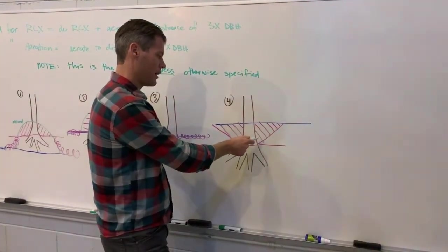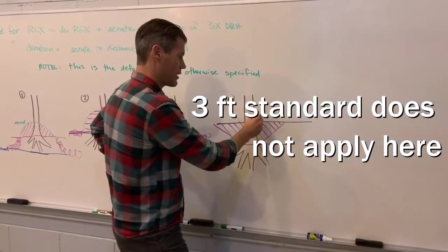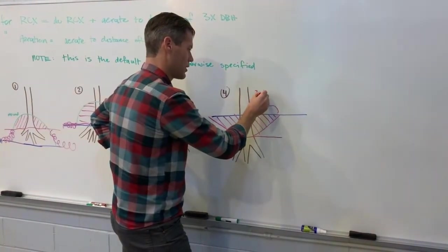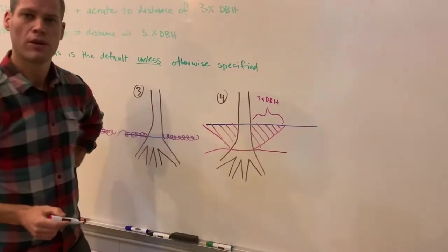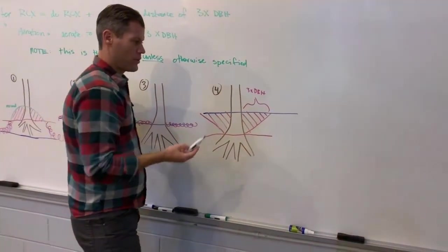This is going to be same, three times DBH. So your bowl can start at a distance of three times DBH, and that'll be your grade. That should be sufficient.